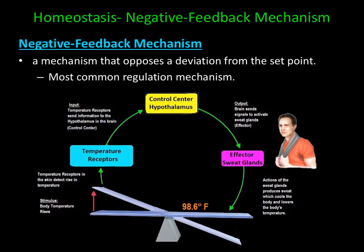Below is the negative feedback mechanism for body temperature. In this illustration, 98.6 represents the set point. A deviation occurs when the body temperature rises. Temperature receptors in the skin detect the rise in temperature and send the information to the hypothalamus in the brain. The brain then sends signals to activate sweat glands, which causes them to produce sweat, which cools the body and lowers the body's temperature. Sweating opposes the initial rise in body temperature.